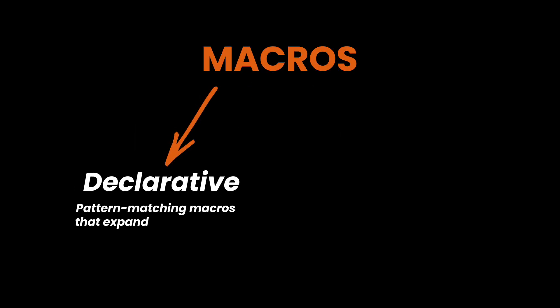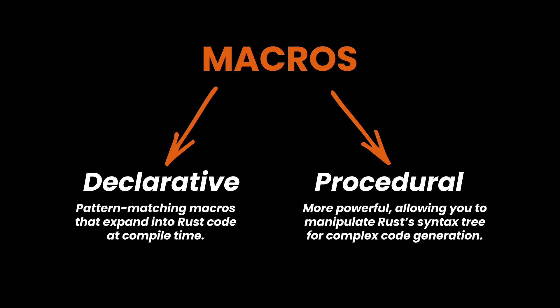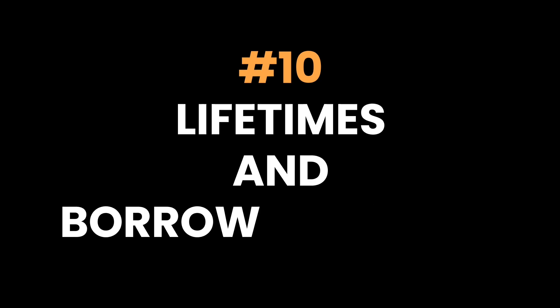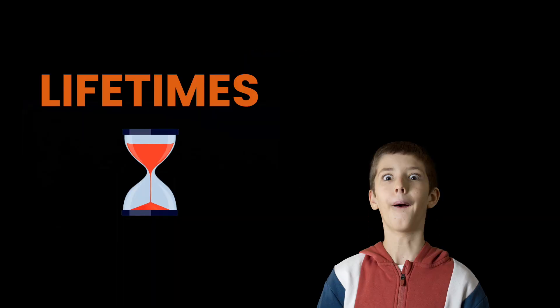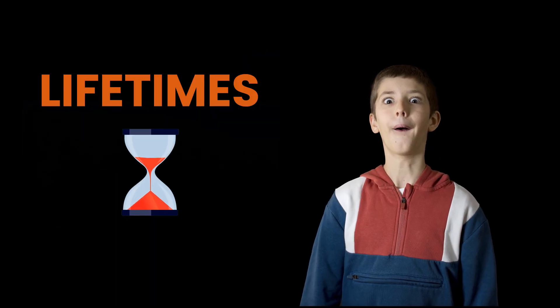Nine: macros for code generation. Rust macros are a powerful metaprogramming tool. There are two types: declarative macros for pattern matching, and procedural macros that generate code. They're great for reducing boilerplate and making Rust code highly reusable.